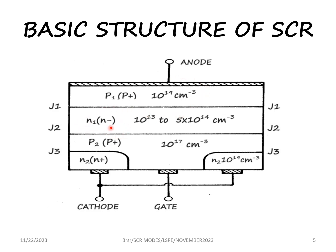The next N-minus layer is doped lightly with the electron concentration of 10 power 13 to 5 into 10 power 14 per centimeter cube. The P2 layer forming the gate is medium doped at 10 power 17 per centimeter cube. The N2 layer which forms the cathode is also heavily doped at 10 power 19 electrons per cubic centimeter.